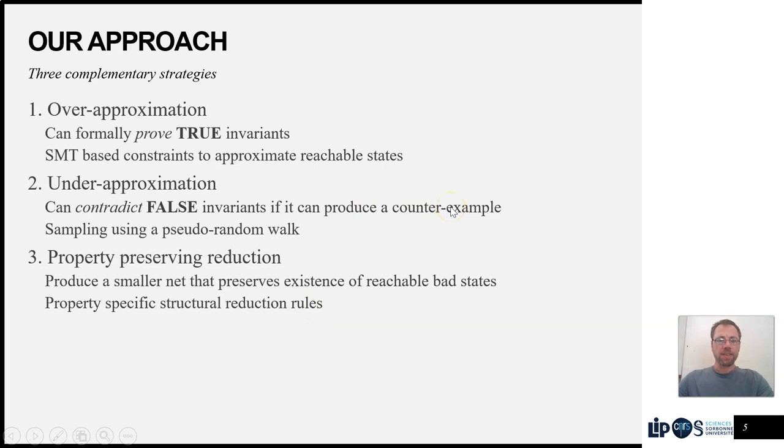The approach we're presenting in this paper is based on three elements. The first one is over-approximation that can formally prove that invariants are true. The second approach is under-approximation that can contradict false invariants using a counter-example. And the third element that gives its name to this paper is a set of property-preserving structural reduction rules.